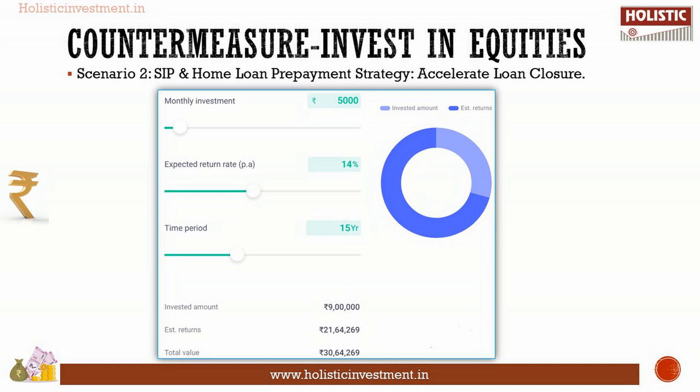Now, it is 15 years into your EMI journey. You are continuing your EMIs and have closed just 40% of your housing loan amount, with about 30 lakhs still pending. Surprisingly, you observe that the SIP you initiated along with your loan has grown significantly and has now nearly reached an amount equal to the remaining home loan balance, as shown here. So, you choose to redeem the units and pay off the remaining 60% of the outstanding loan.